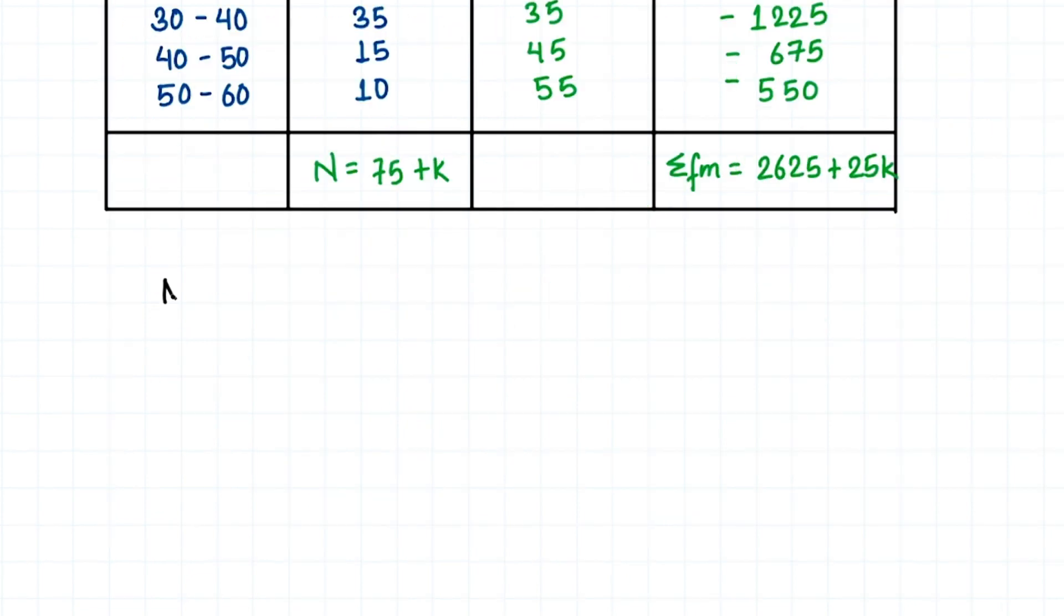Now we know that the formula for mean is summation of fm divided by n. We have our summation fm as 2625 plus 25k, divided by n which is 75 plus k.